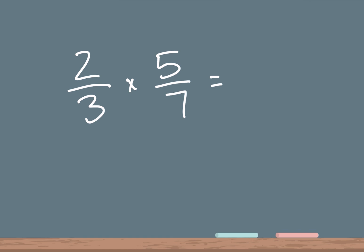So first step would be to multiply your numerator, which is your top number. Then the second step is to multiply your denominator, which is your bottom number. So our first problem on the board is 2 over 3 times 5 over 7.